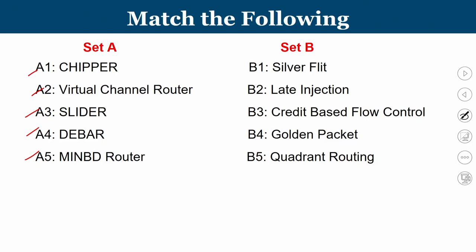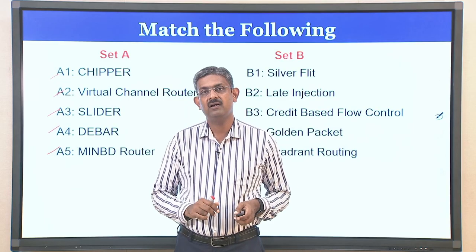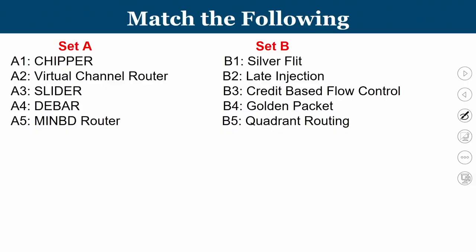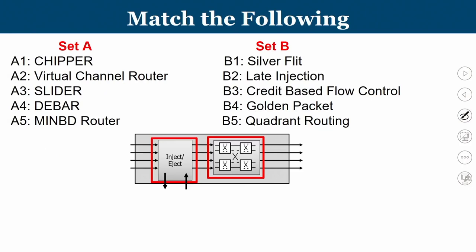We have five different types of routers and some properties associated with them. Only if you are very thorough about how the internals of these routers work and their operational principles will you be able to correlate with the right match. For chipper, the golden packet concept is used — the golden packet always gets its preferred port and will never be deflected. So chipper matches with golden packet.